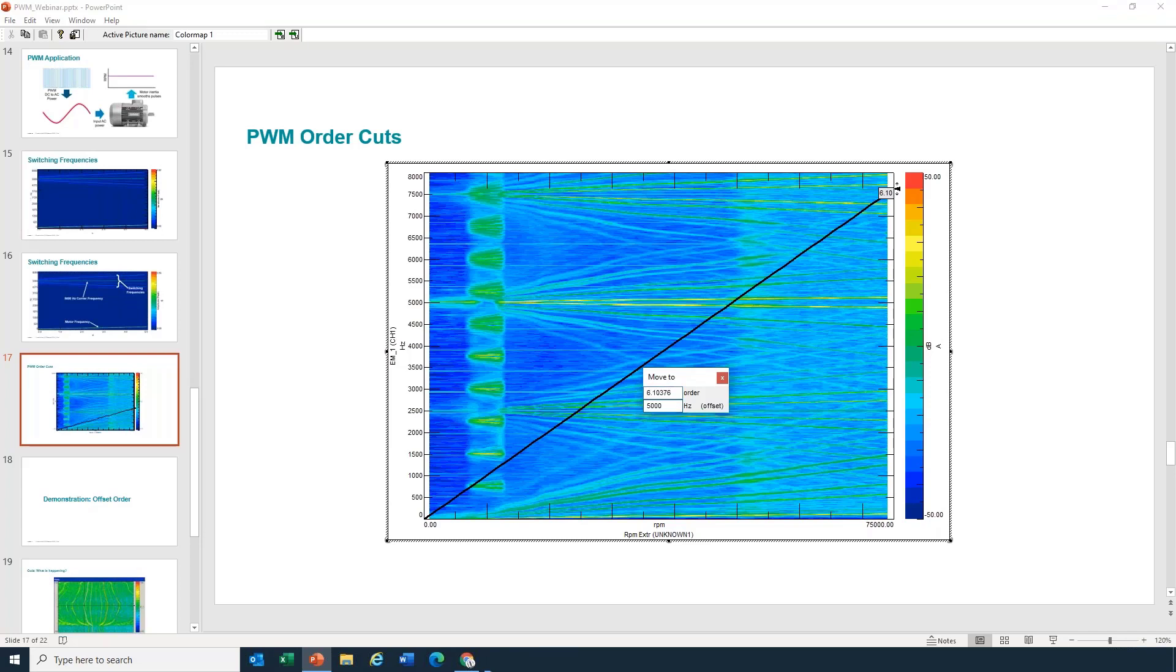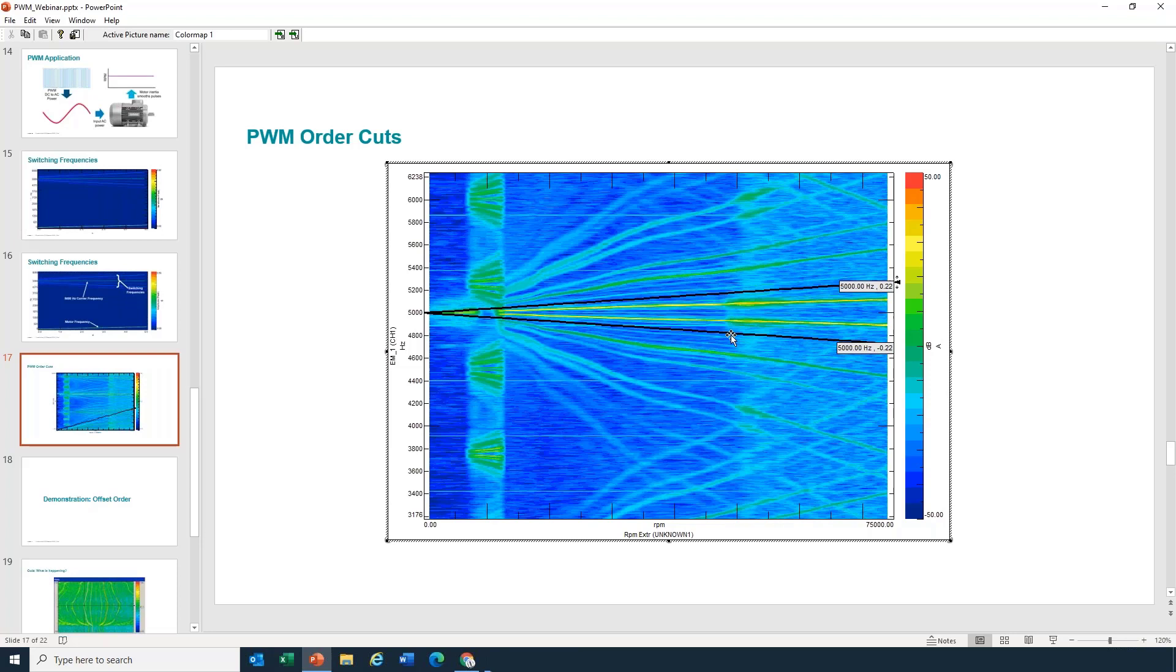And so yeah, if I type in 5,000 hertz, look at that Charles. I can actually now line up on that PWM frequency and find out what the main harmonics are, et cetera, you know, to analyze the PWM frequency. Does that kind of make sense to you Charles?